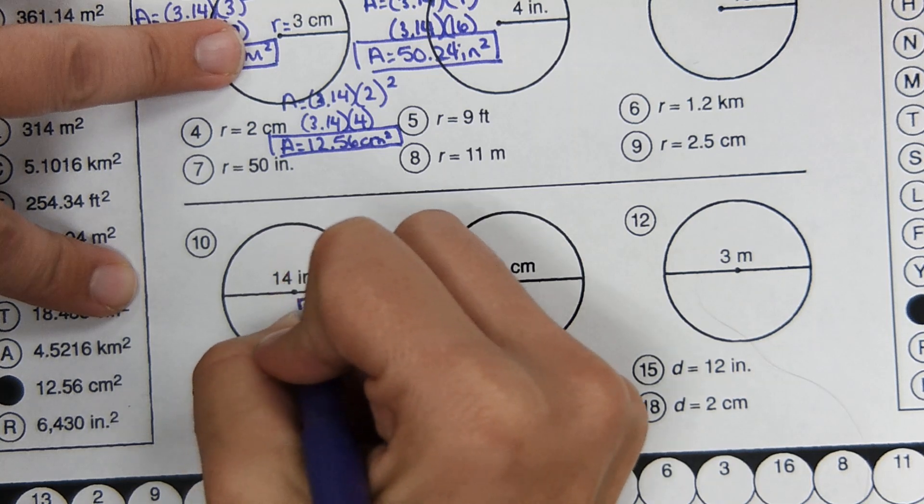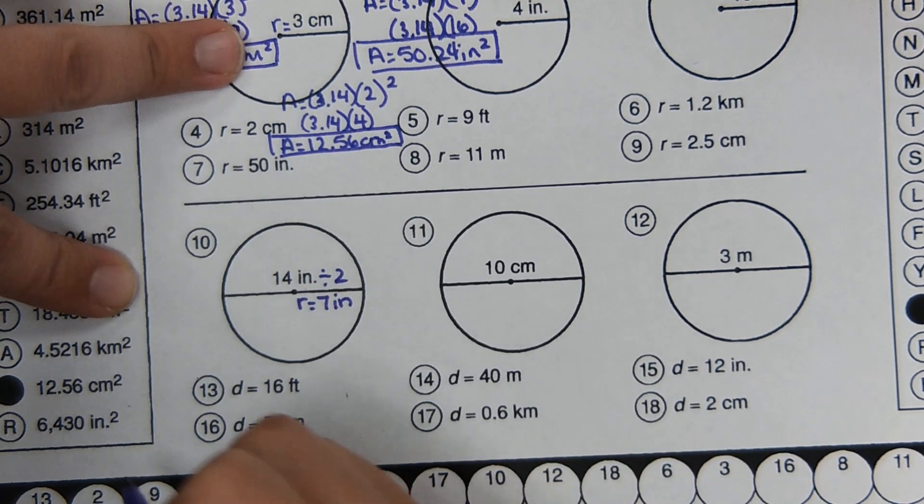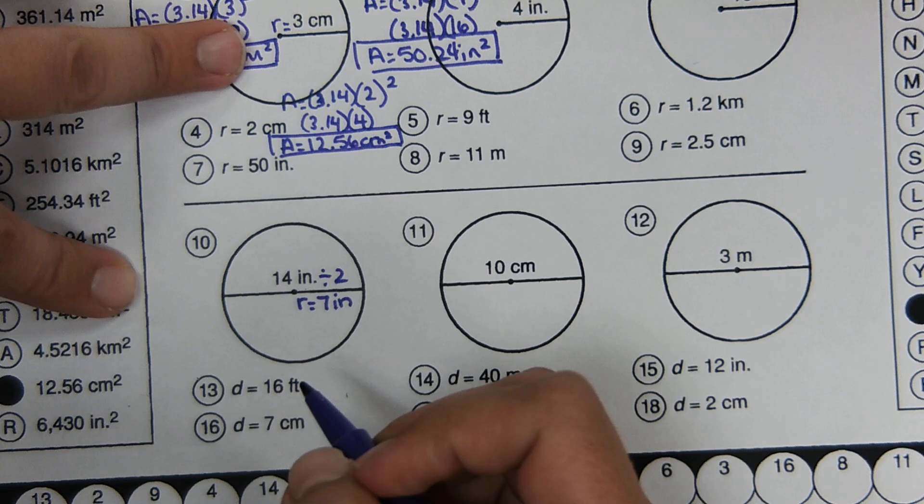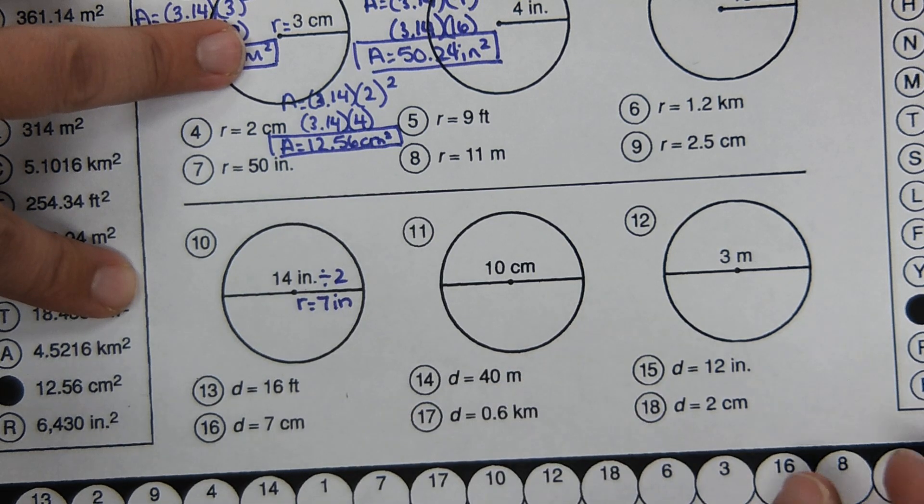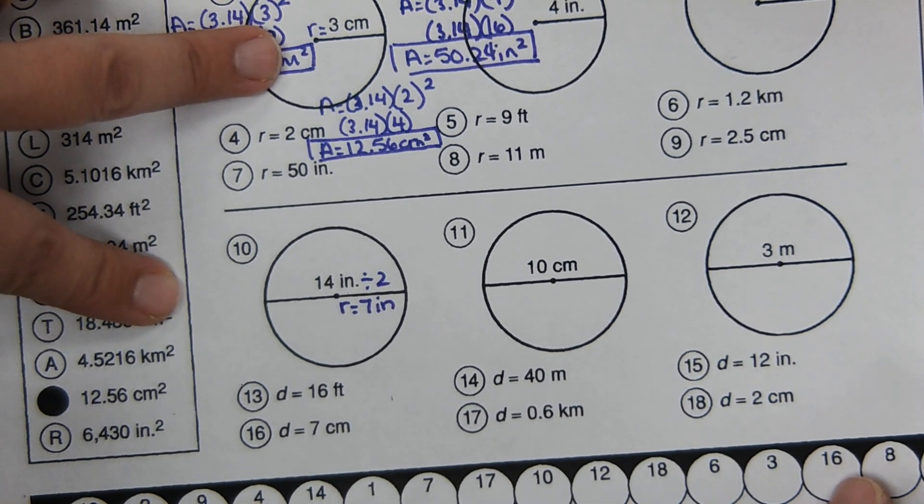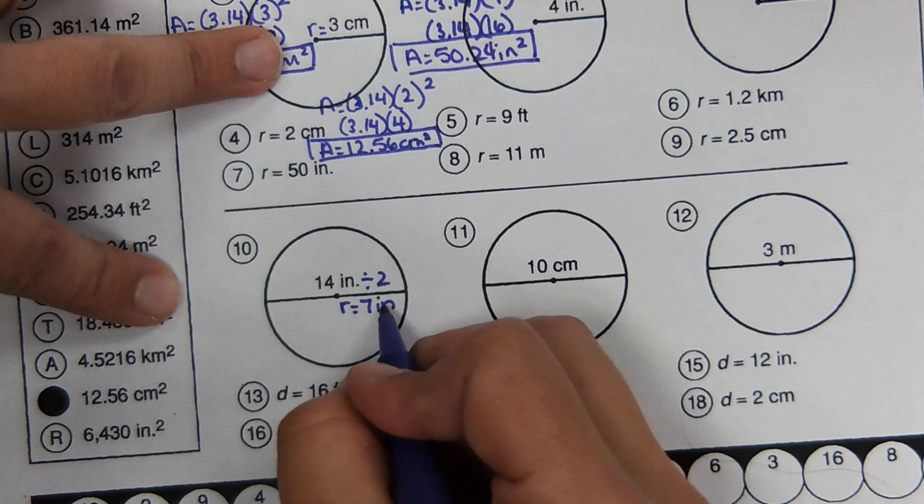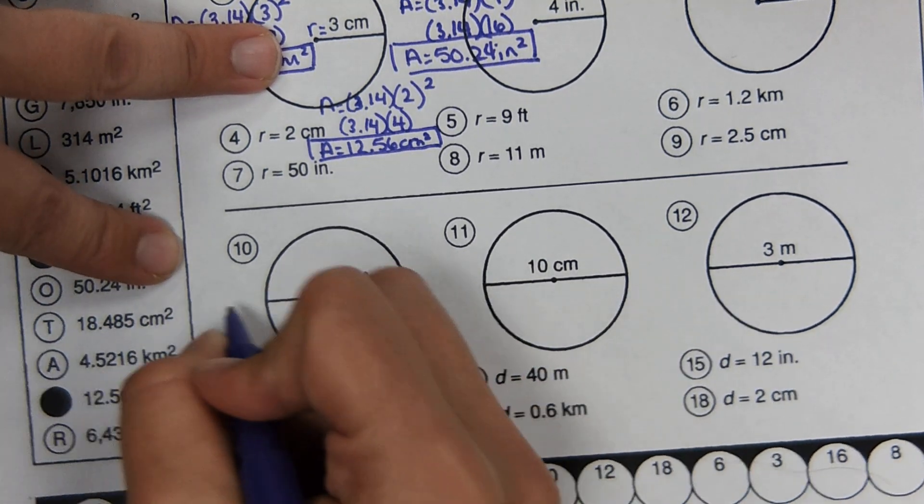So the radius equals seven inches. And then once you have the radius, you can plug it into the equation and use it the same way.